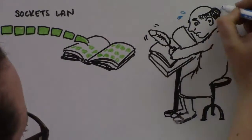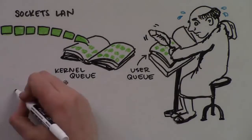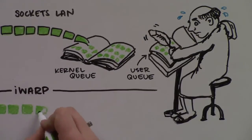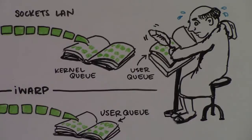That requires the processor to copy all the data from the kernel queue into the application's user space. Because iWARP already knows where the data is going with its queue pairs, it can directly place the data in the application's user space without making unnecessary copies.